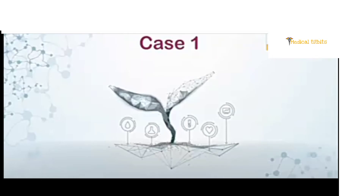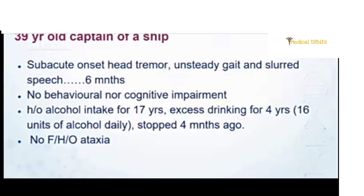This is a 39-year-old captain of a ship who presented with a subacute onset head tremor, unsteadiness of gait with slurring of speech for six months. There was no behavior or cognitive decline in that patient, but he gave a very strong history of alcohol consumption. He was taking alcohol for 17 years and has a history of excessive drinking for the last four years. He claimed it was 16 units of alcohol daily, but it was likely far more than that.